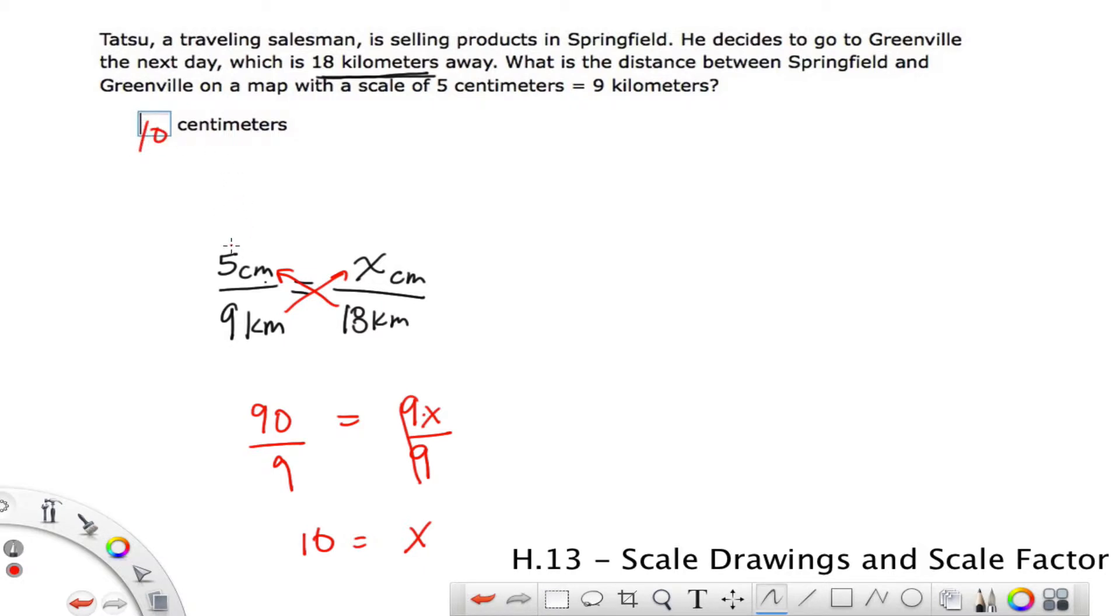We're going to do a couple more because these are pretty straightforward, but it's all going to come down to setting up our proportions, and cross multiplying, and then dividing.